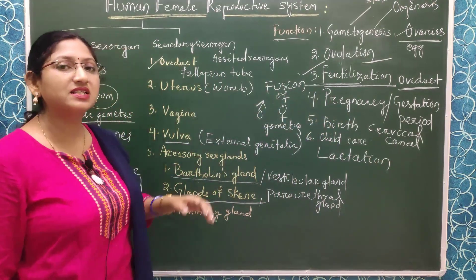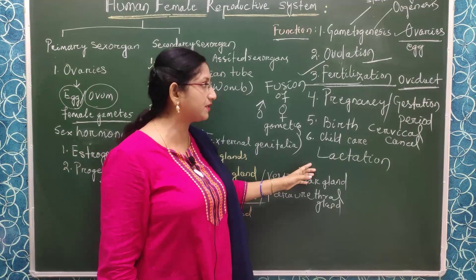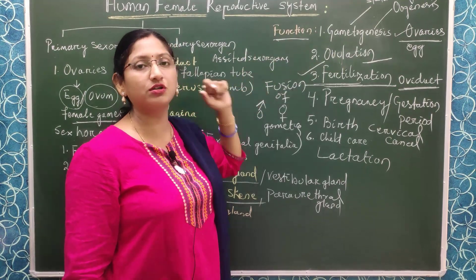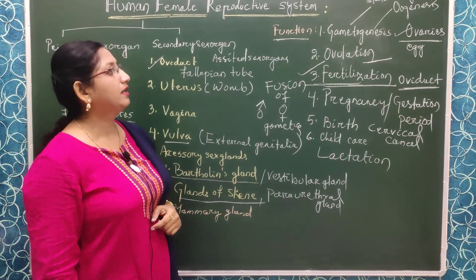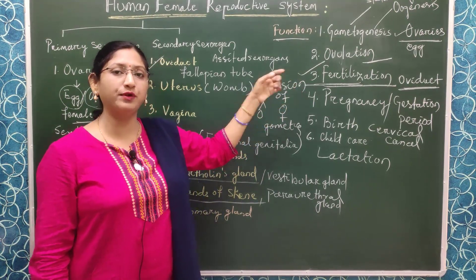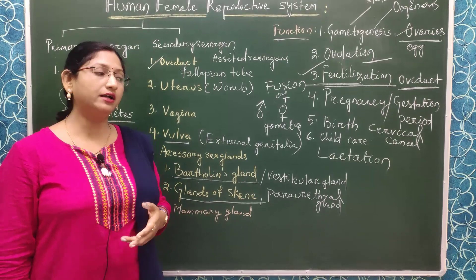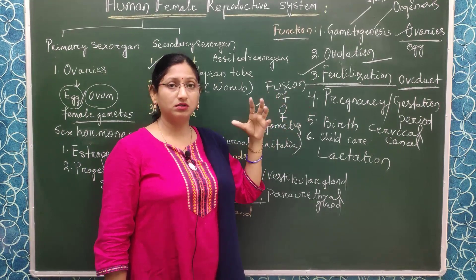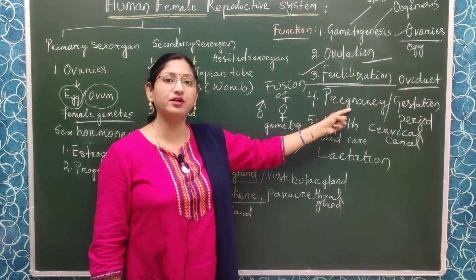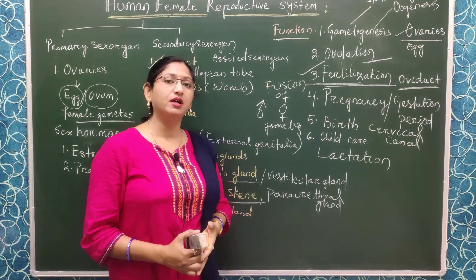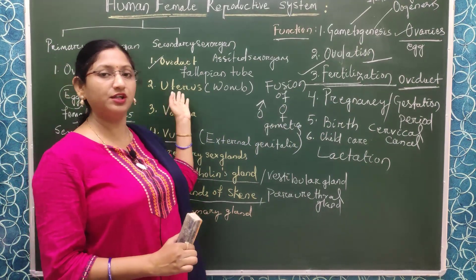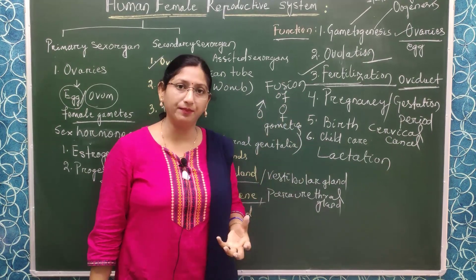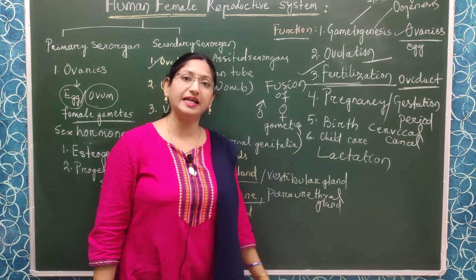The specific functions of the female reproductive system, in summary, are: oogenesis or gametogenesis — formation of gametes; ovulation — release of the egg or ovum from the ovaries; fertilization — fusion of male and female gametes to form the zygote, which later produces the embryo; gestation period or pregnancy — carrying of the baby in the female womb or uterus; birth of the baby; and lastly, lactation for child care.